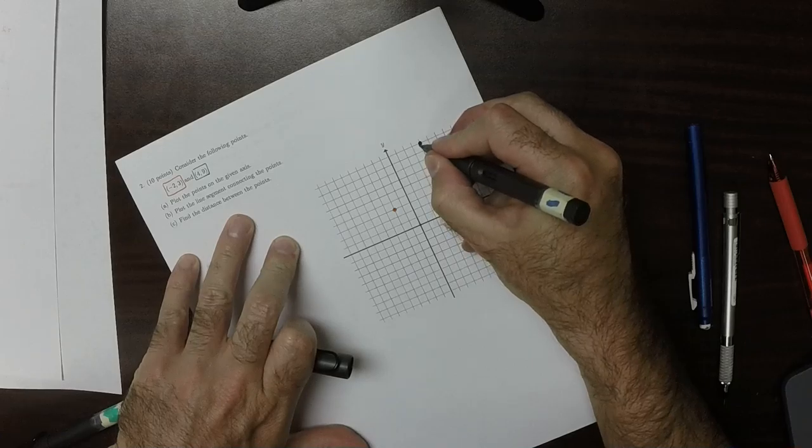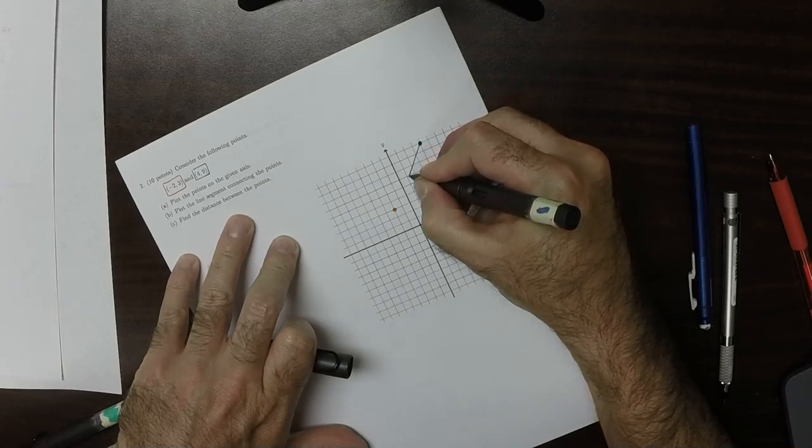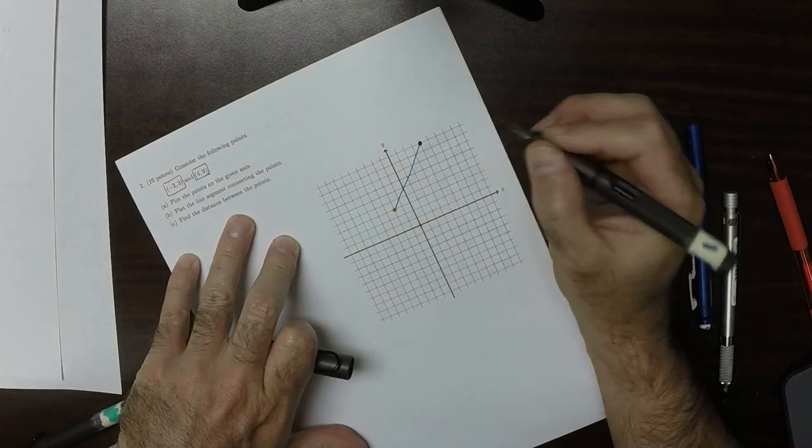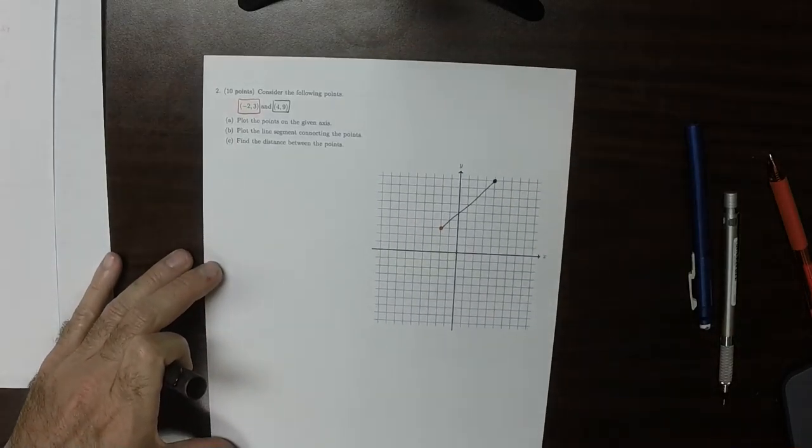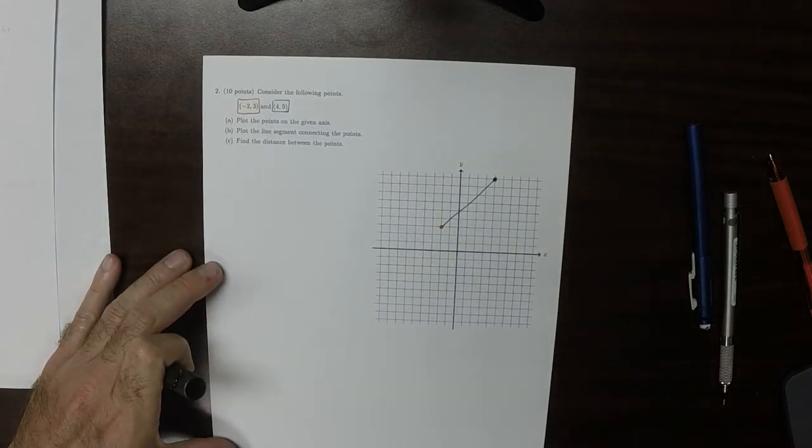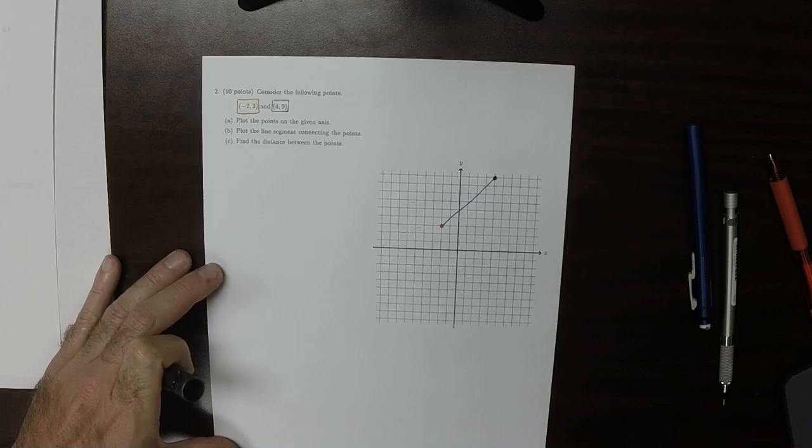So that's this line segment. So that's part B. Find the distance between the points. OK.